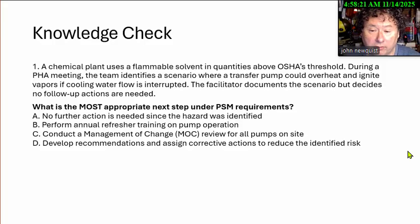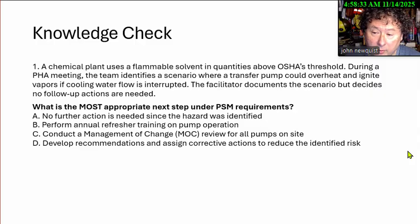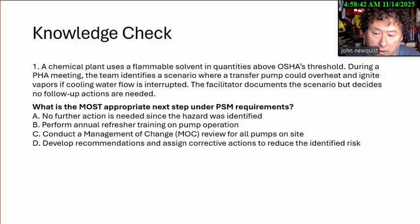A chemical plant is using a flammable solvent in quantities above OSHA's threshold. During a PHA — process hazard analysis meeting — the team identifies a scenario where a transfer pump could overheat and ignite vapors if cooling water flow is interrupted. The facilitator documents the scenario but decides no follow-up actions are needed. What's the most appropriate next step under PSM requirements?